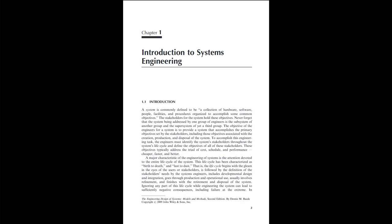The objective of the engineers for a system is to provide a system that accomplishes the primary objectives set by the stakeholders, including those objectives associated with the creation, production, and disposal of the system. To accomplish this engineering task, the engineers must identify the system's stakeholders throughout the system's life cycle and define the objectives of all of these stakeholders.